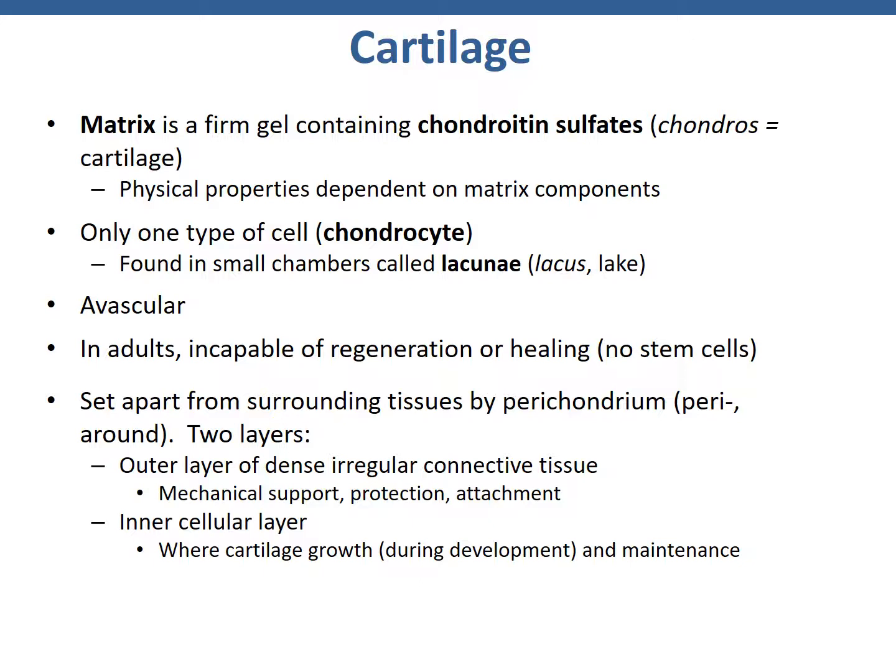In adults, cartilage is incapable of regeneration or healing as there are no stem cells. Some outer portions of some cartilage can see minor regeneration, but by and large there's no regeneration, which is why cartilage damage wears out a lot like brake pads. It's set apart from surrounding tissues by the perichondrium, a connective tissue layer surrounding the cartilage. It consists of two layers: the outer layer of dense irregular connective tissue, which provides mechanical support, protection, and attachment; and an intercellular layer where cartilage grows during development and allows for cartilage maintenance.